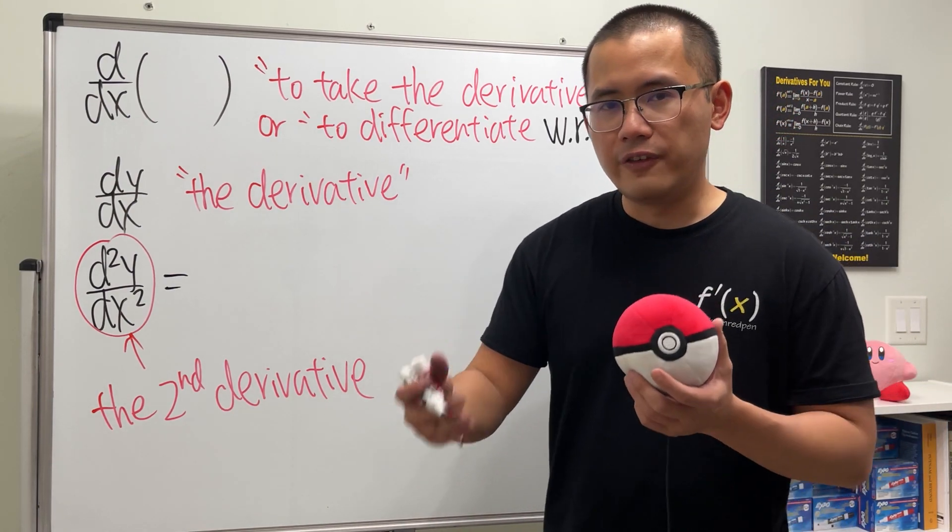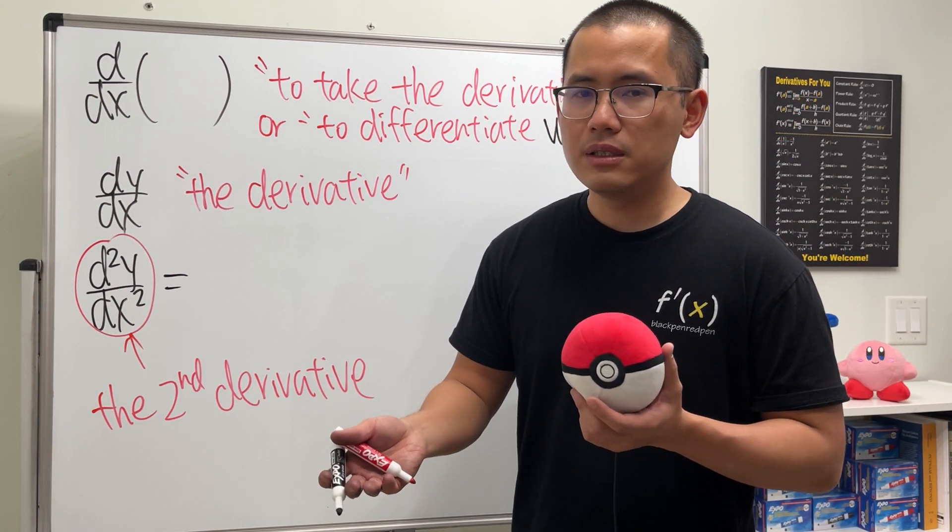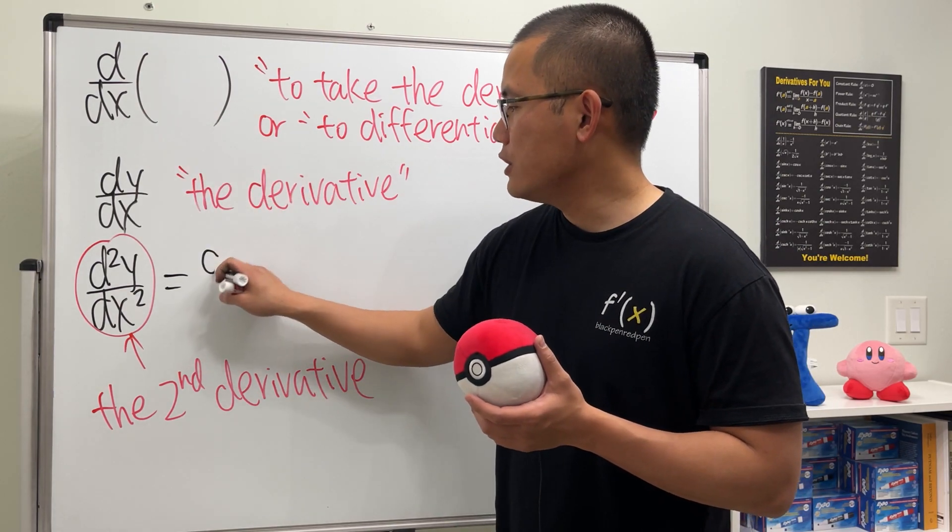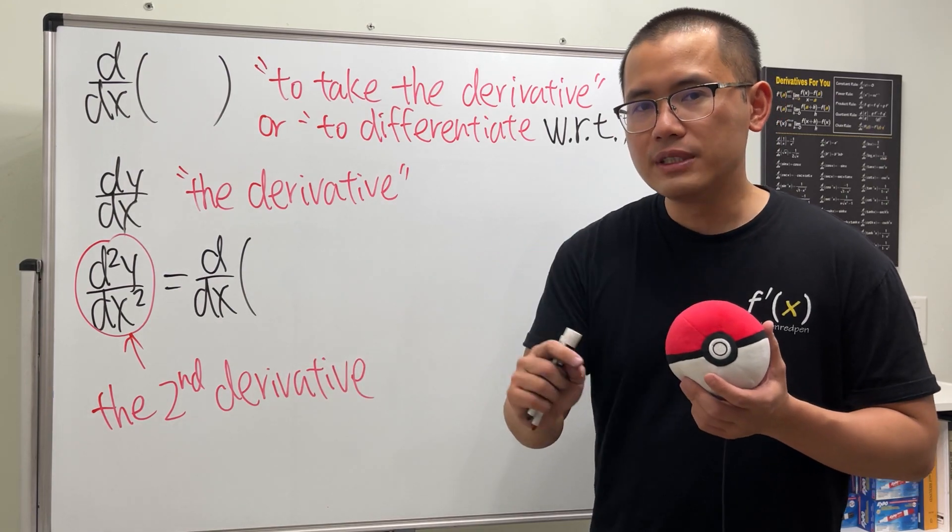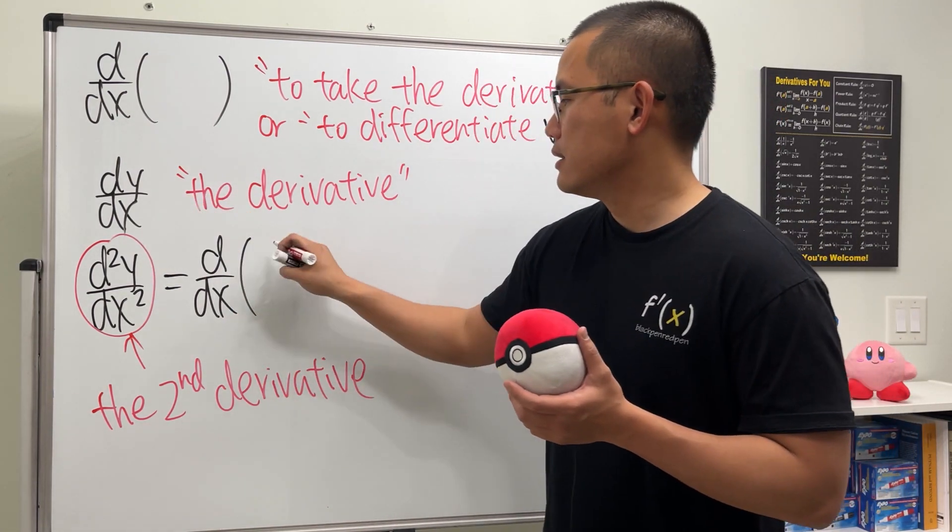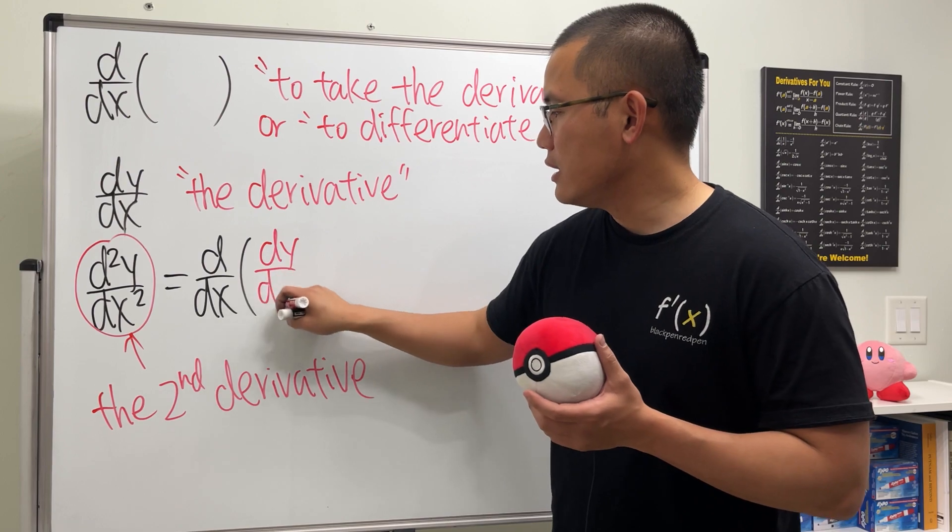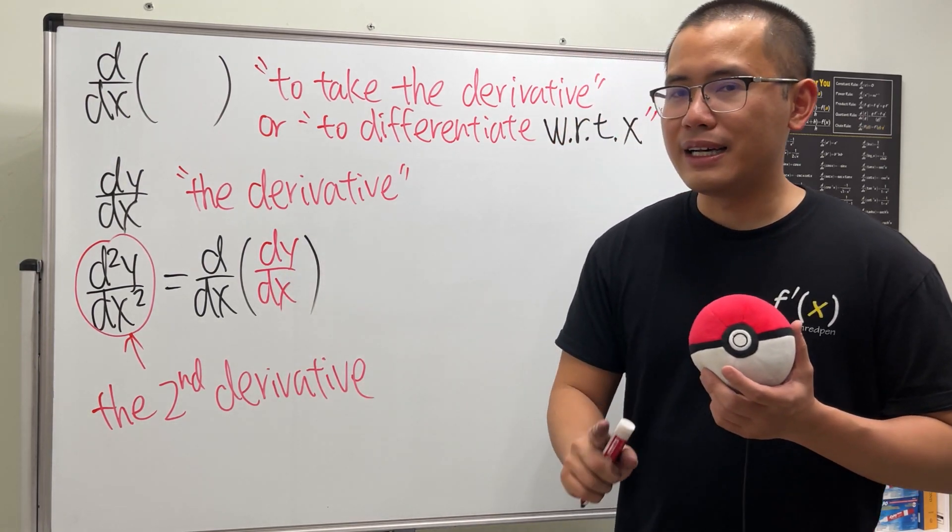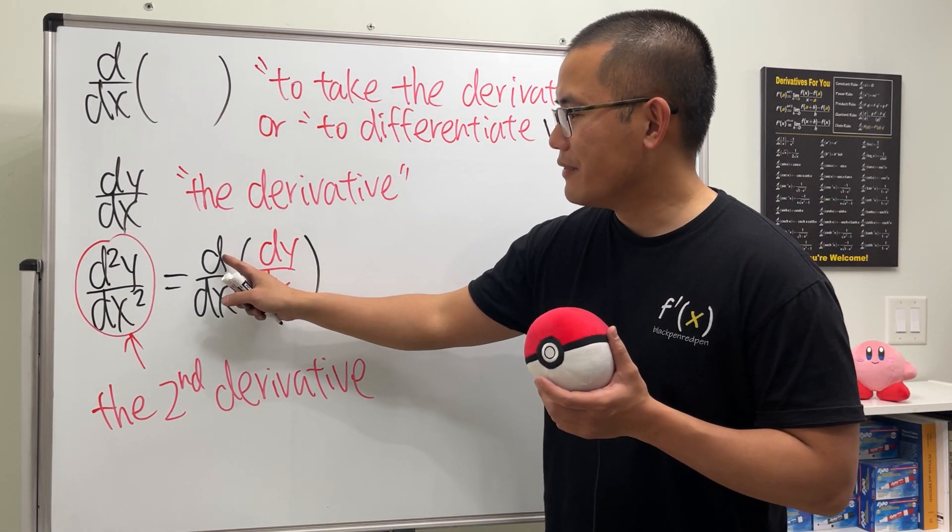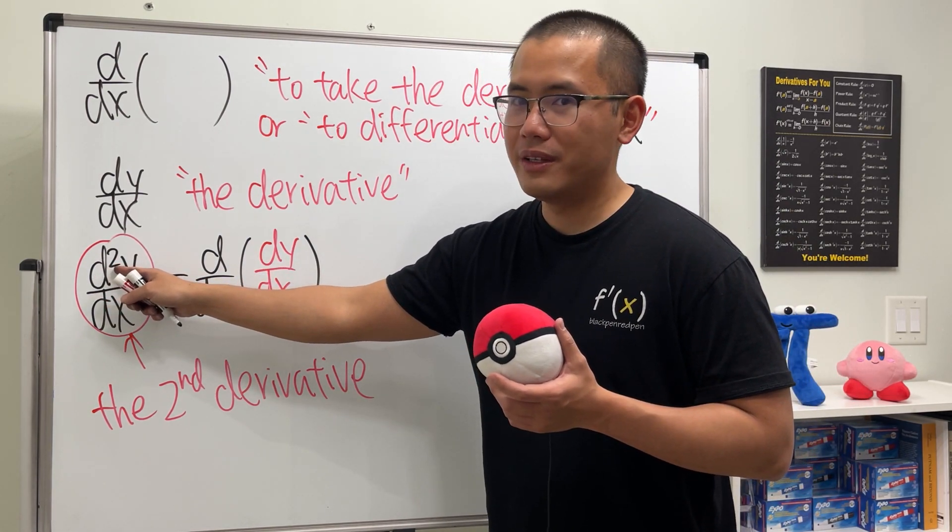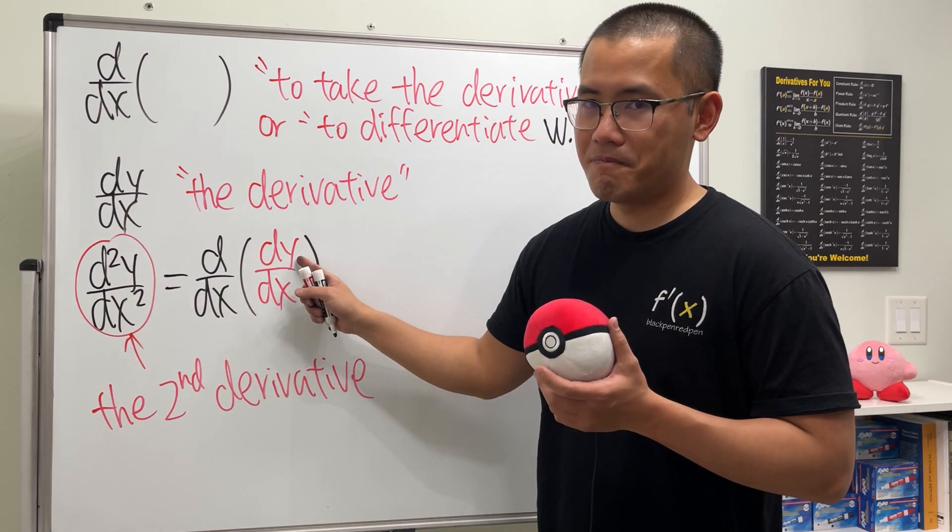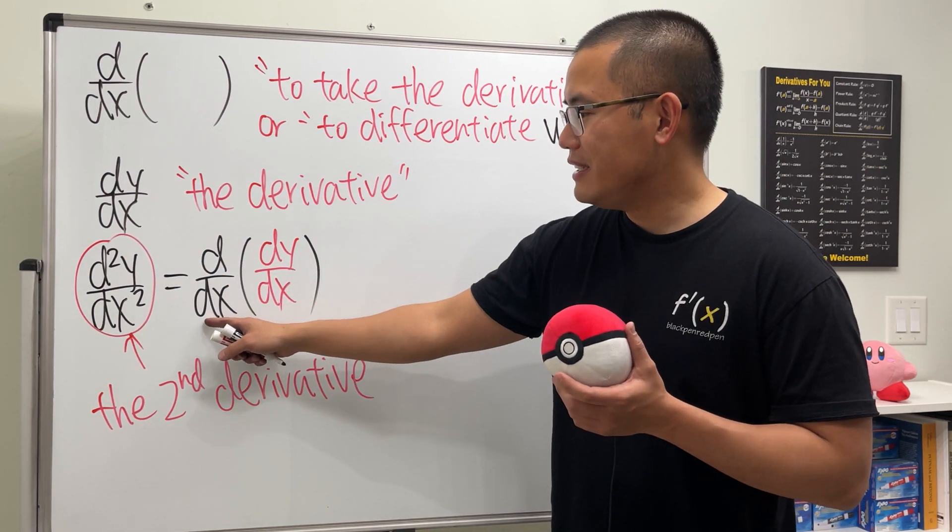We will have to differentiate the first derivative, right? So we will have to differentiate, so that's d/dx, the first derivative. And the first derivative is precisely this, so dy/dx. Aha, you see that on the top we have d and d happening twice, aha, d squared, and then we have the y.